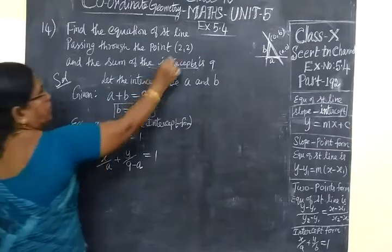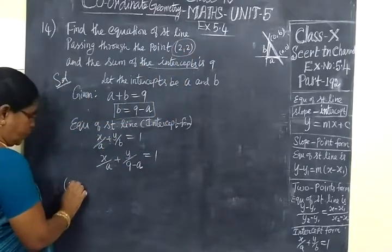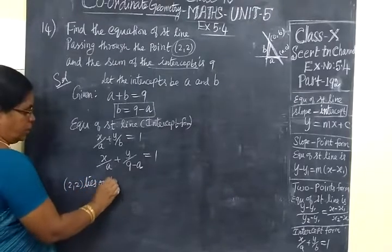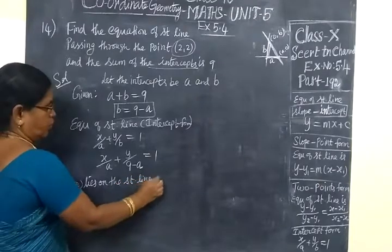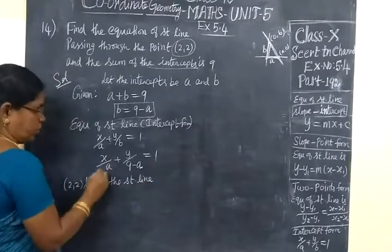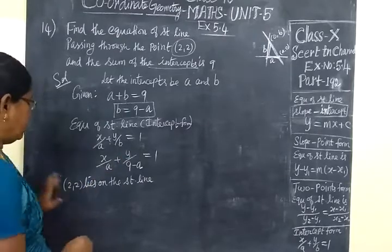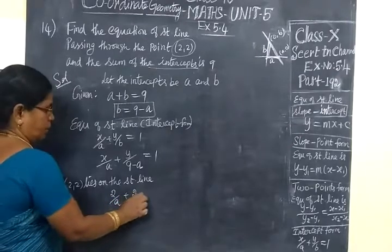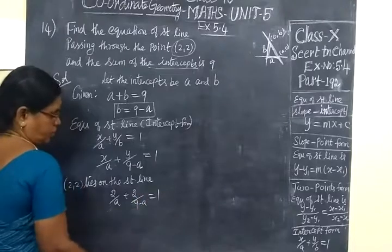Now the point (2,2) lies on the straight line. So X is 2, Y is also 2. So 2 by A plus 2 by 9 minus A equal to 1.